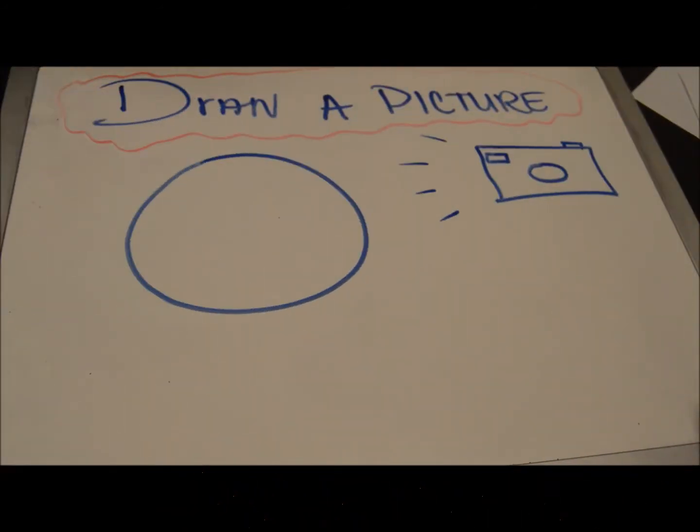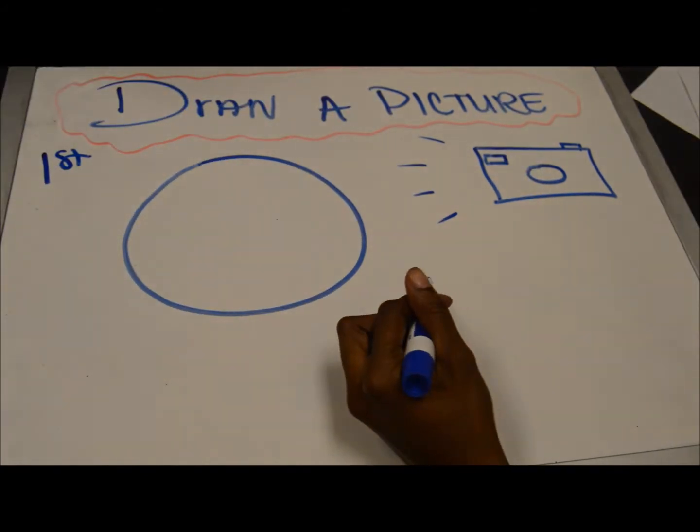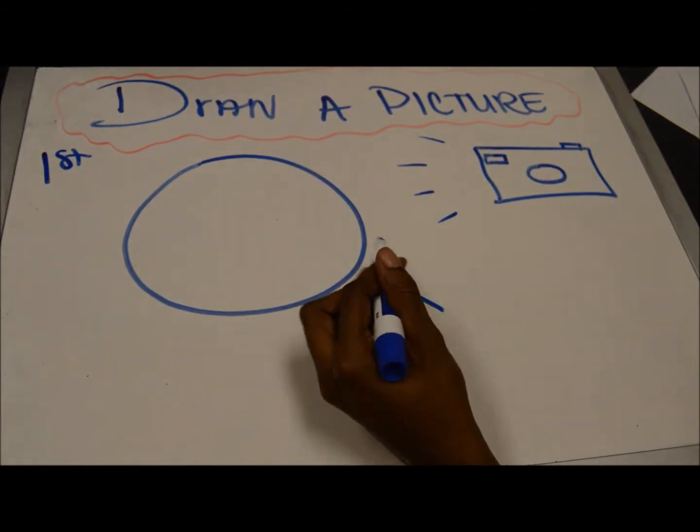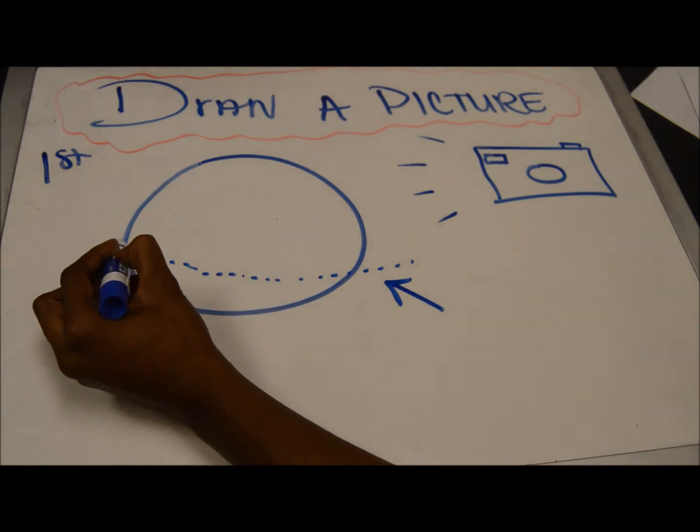Since we are using the related rates method for this problem, the first step we would do to solve it would be to draw a picture. So you would draw a picture of the spherical tumor that is expanding at a constant rate of k.